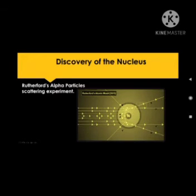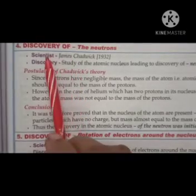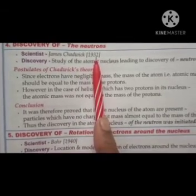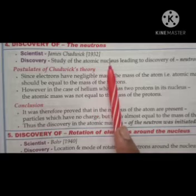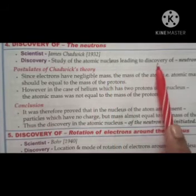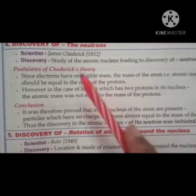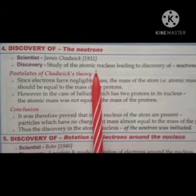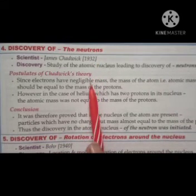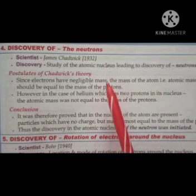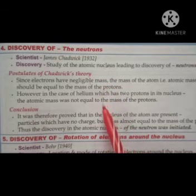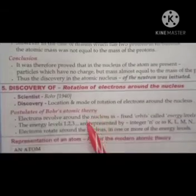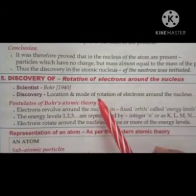Next is the discovery of neutrons. James Chadwick in 1932 studied the atomic nucleus, which led to the discovery of neutrons. These neutrons are particles which have no charge, and they are also present in the center of the atom — that is, in the nucleus.